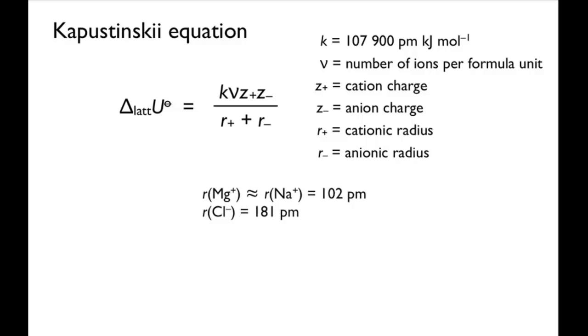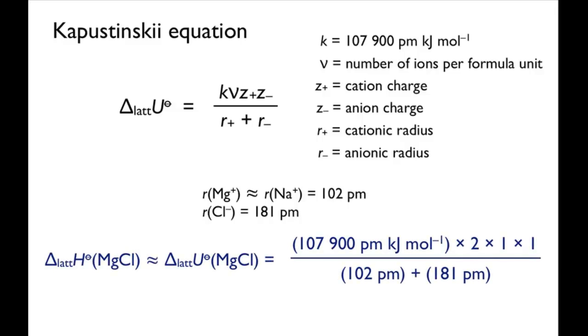If you assume that the ionic radius for Mg-plus is the same as that for Na-plus, which is next to it in the periodic table, the ionic radii are 102 picometers for Mg-plus and 181 picometers for Cl-minus. Putting the values into the equation gives a value of the lattice enthalpy of 763 kilojoules per mole.